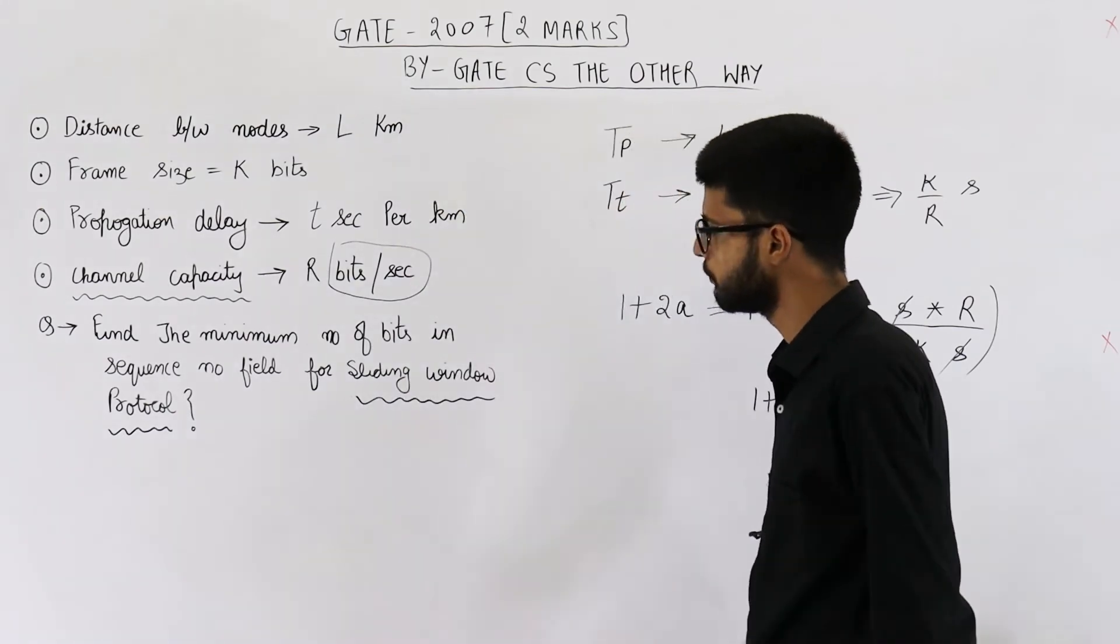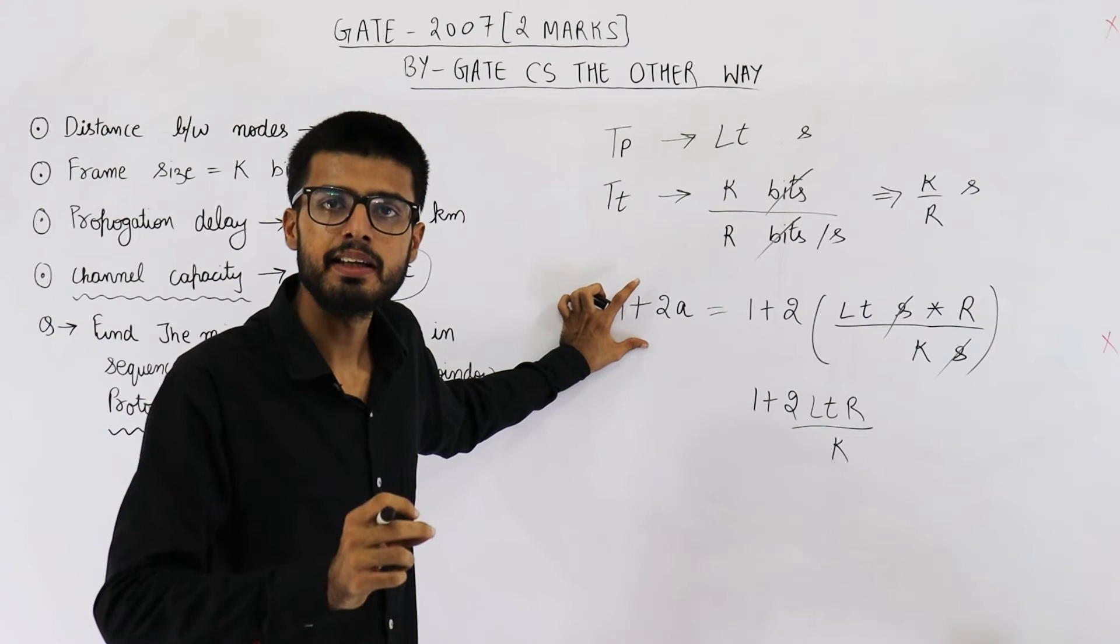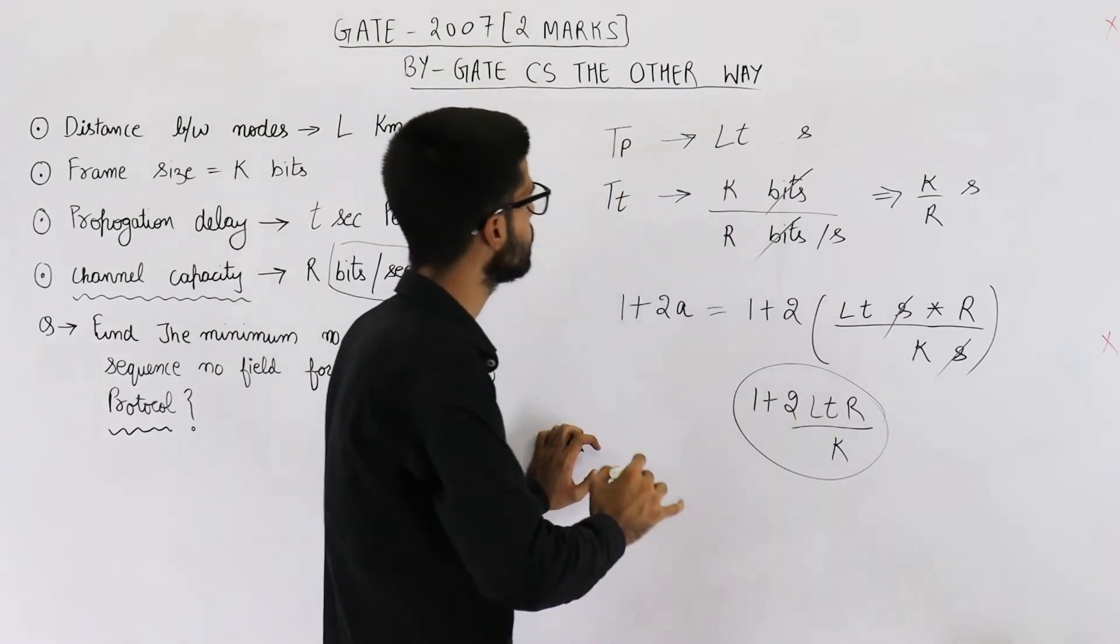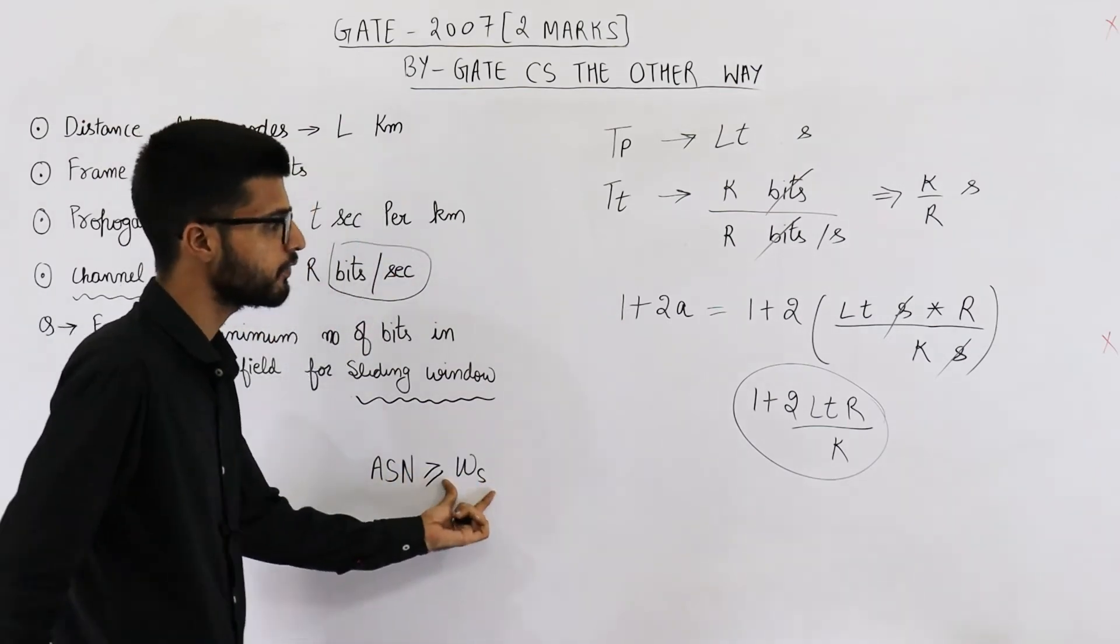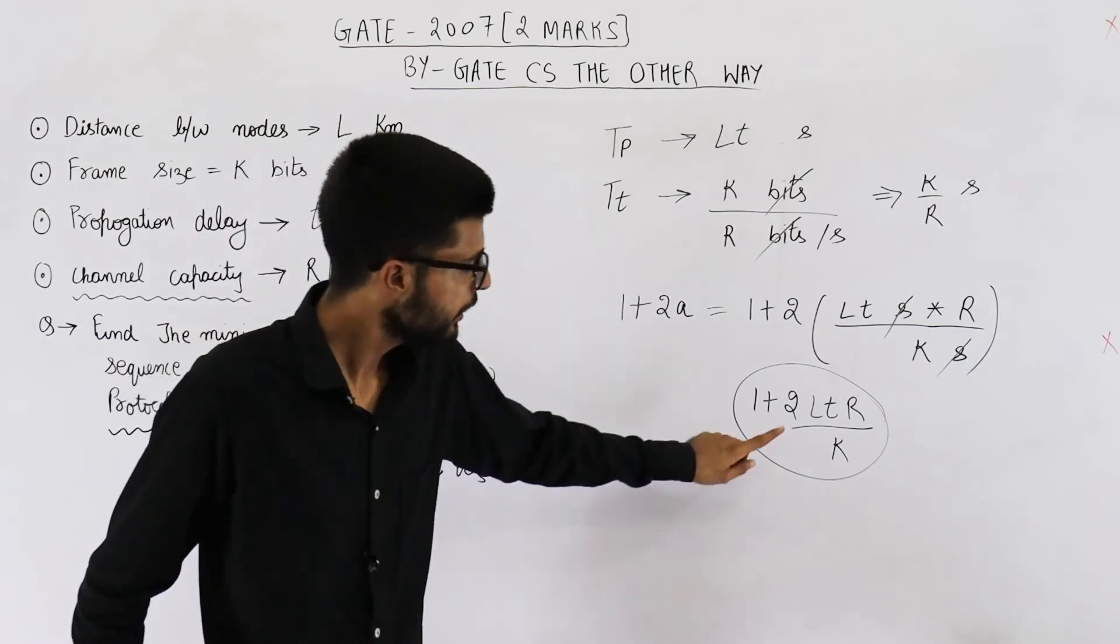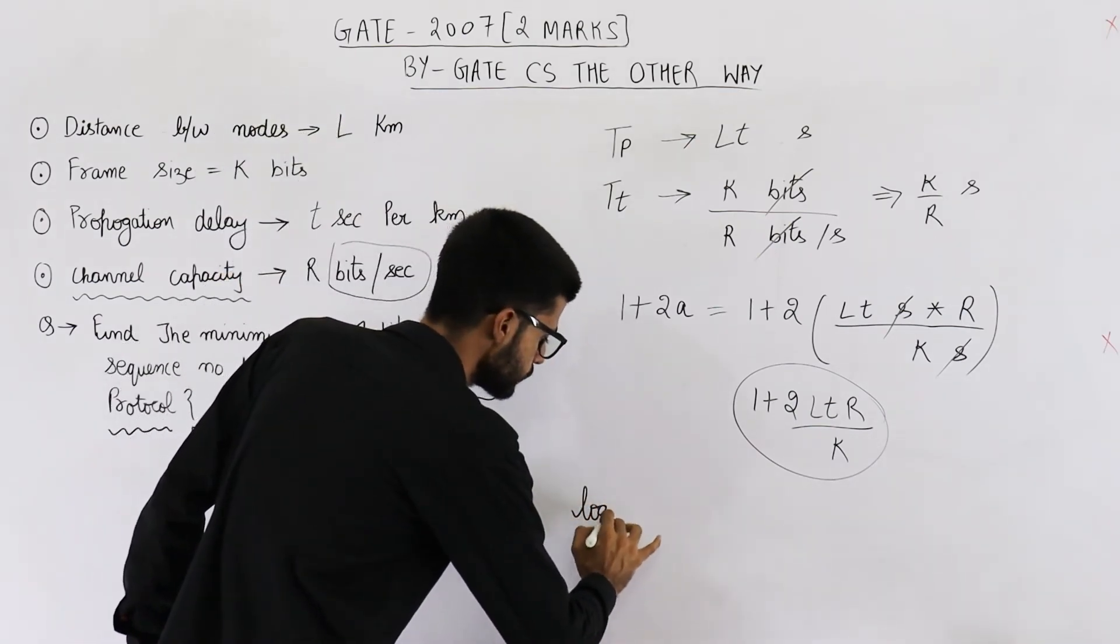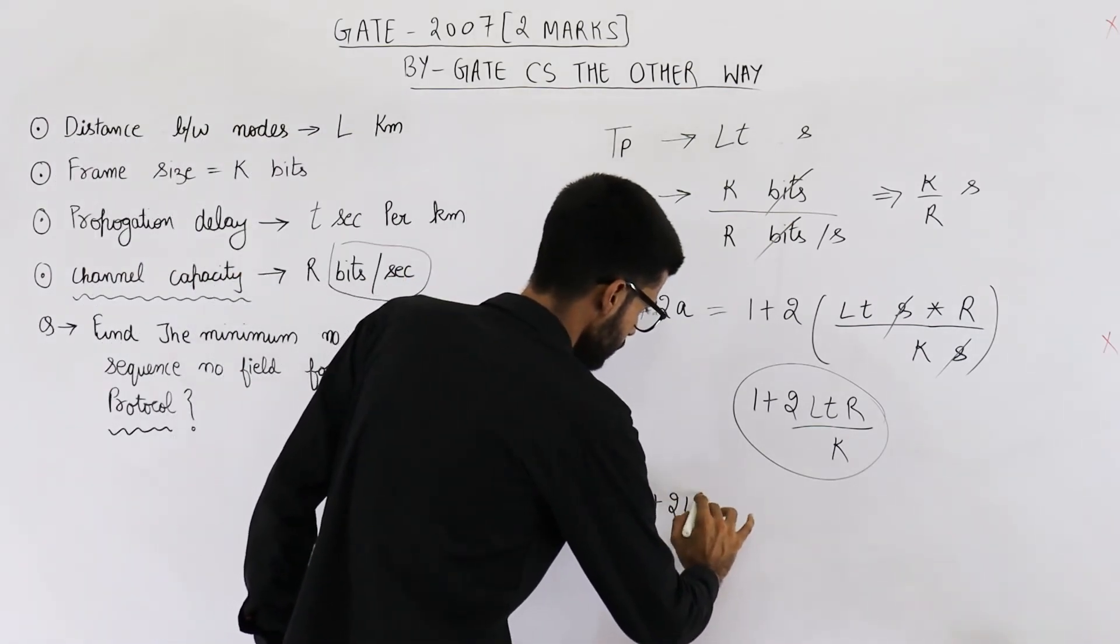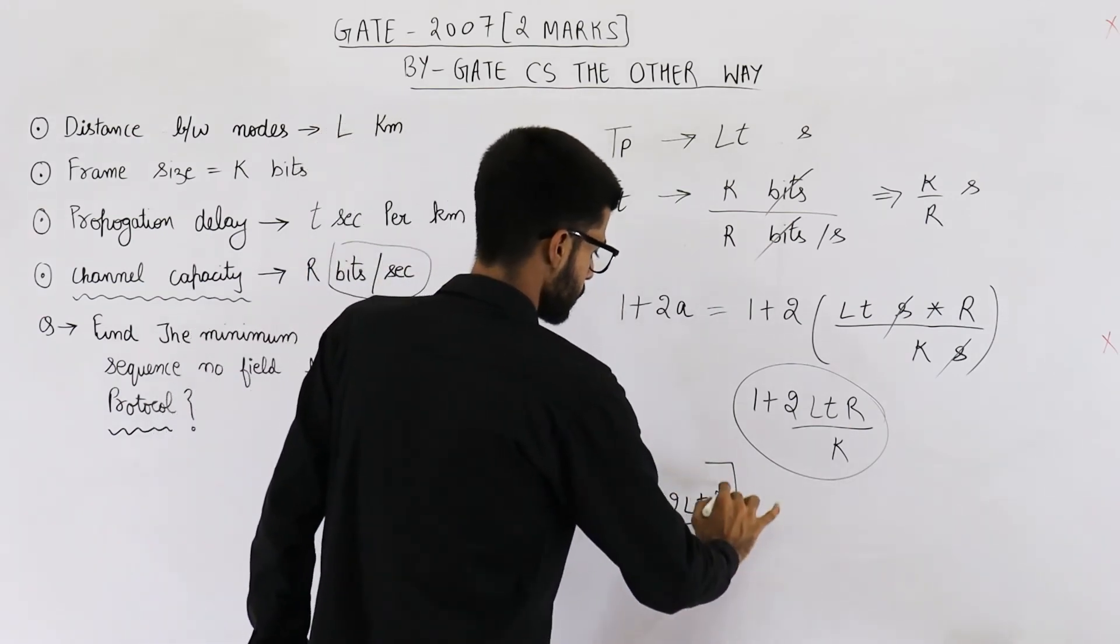Now they were asking minimum number of bits in sequence number field. See, the sequence numbers must be at least those many equal to the size of sender window size. Sender window size is this. See, the formula was available sequence numbers must be greater than or equal to sender window size. We have found out that this is the sender window size. That means minimum these many sequence numbers are surely required. If these many sequence numbers are required, what will be the number of bits in sequence number field? It will be log to the base 2 of this value. It is 1 plus 2LTR divided by K and ceiling.